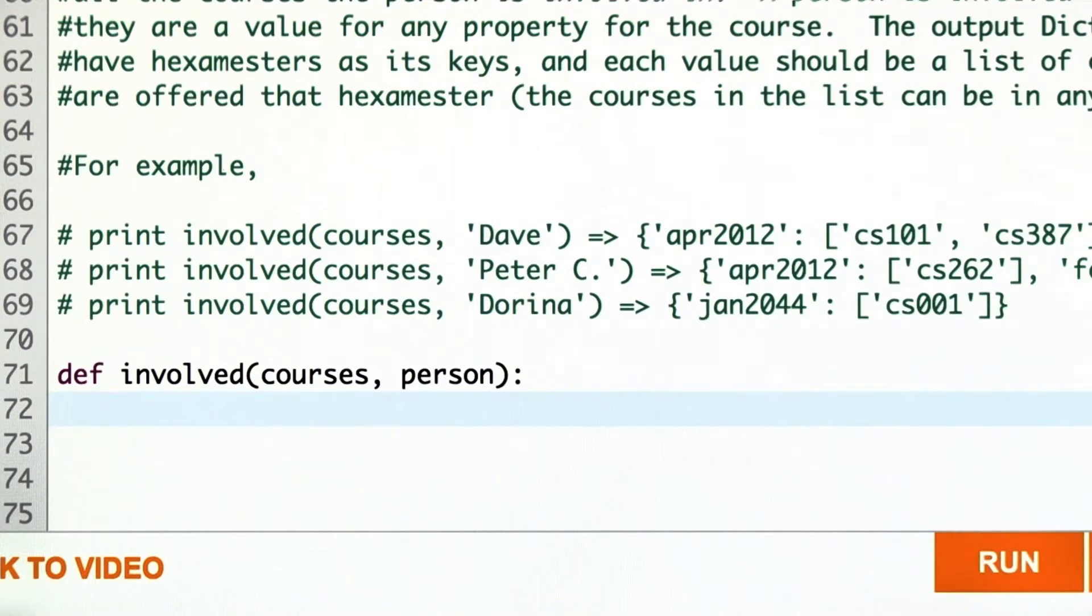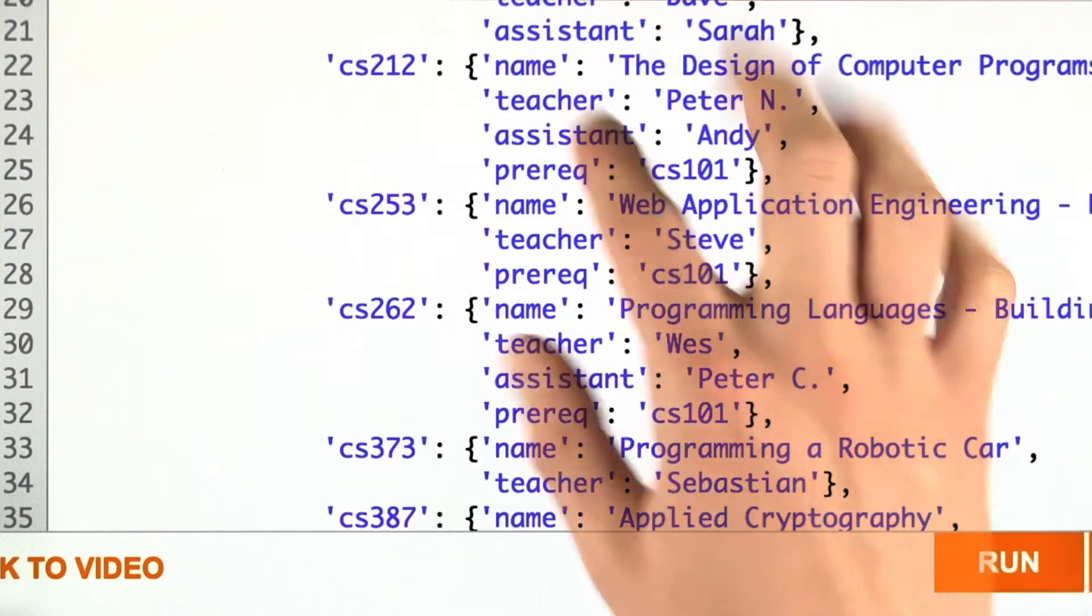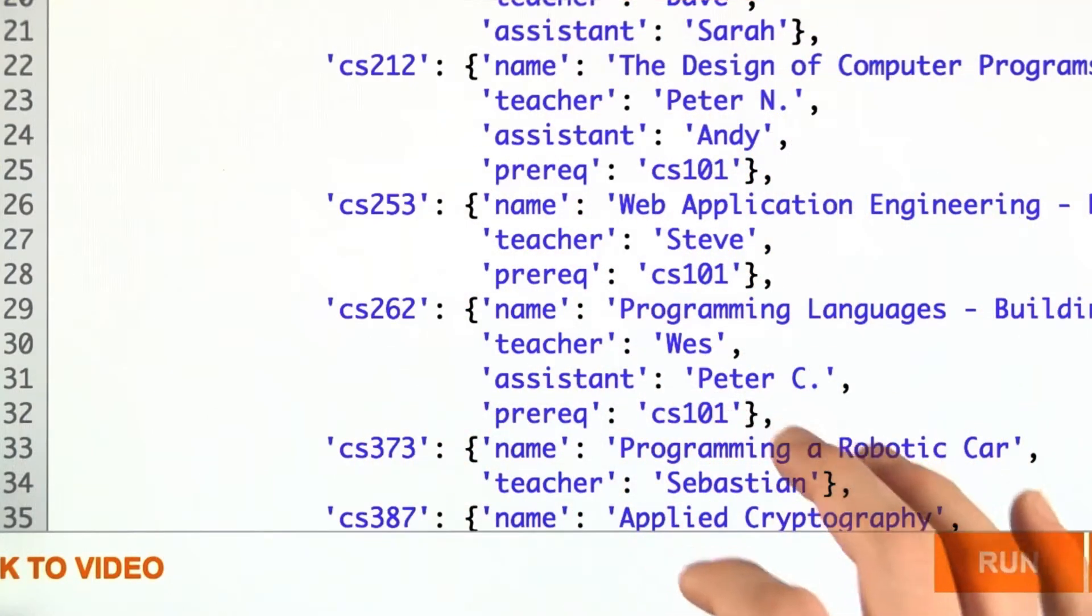So, one question you may be asking yourself: what does it mean to be involved? And if we go back to our data structure, what we're going to do is look at the name value pairs associated with the course.